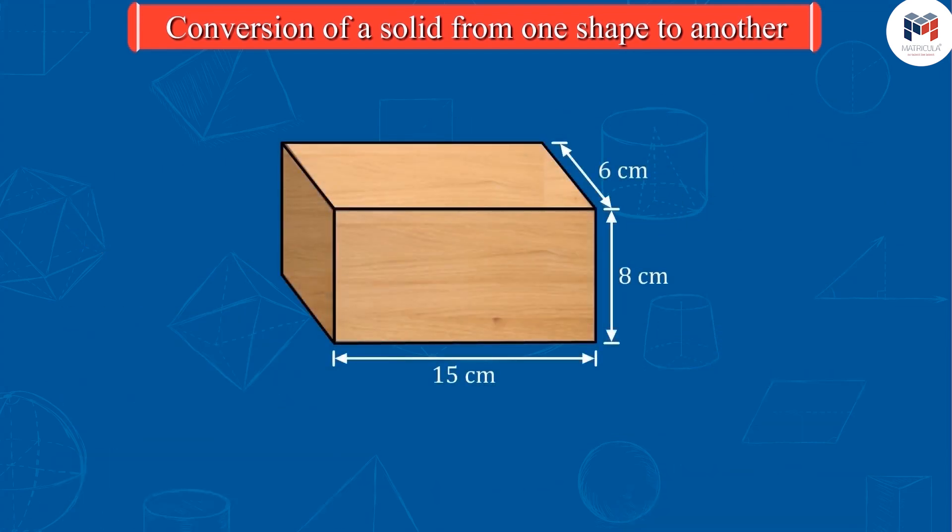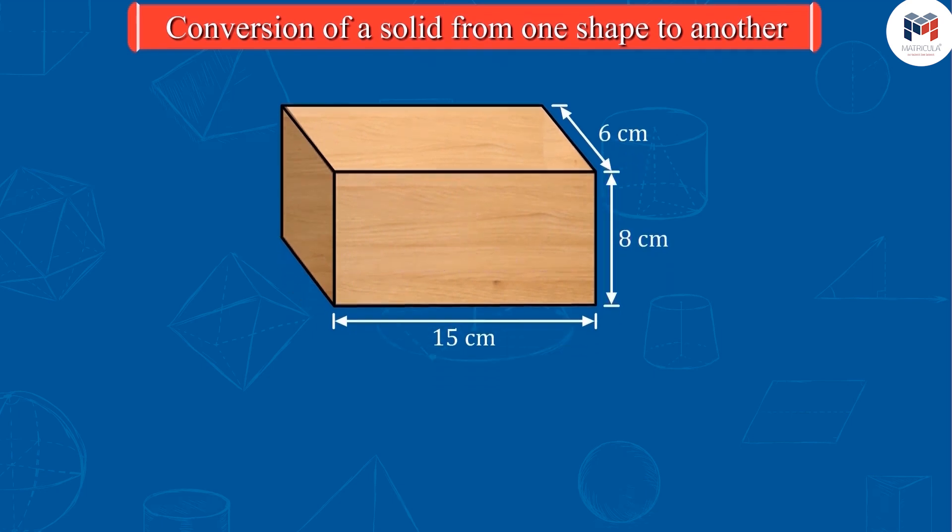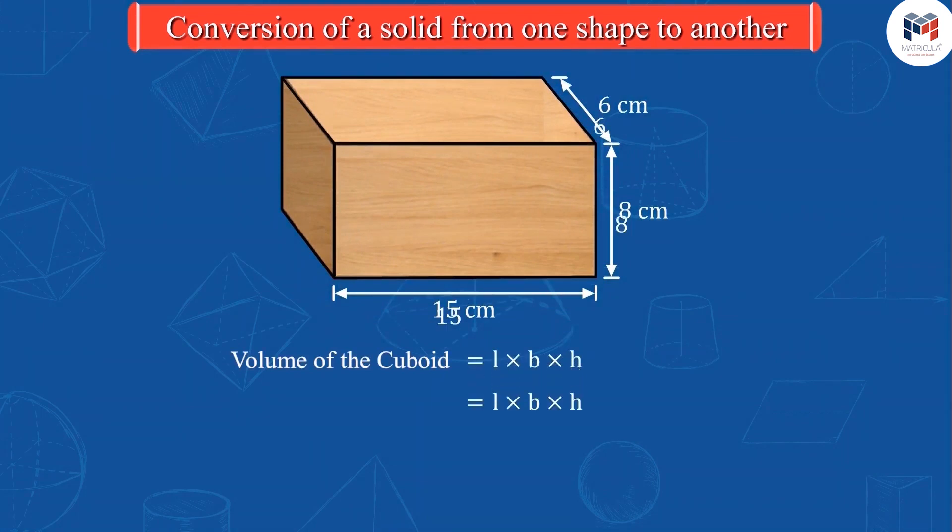Now, let's look at this piece of wood. Its length is 15 cm, width is 6 cm, and height is 8 cm. Can you guess the volume of this piece of wood? Perfect! The volume of this piece will be 720 cubic centimetres.